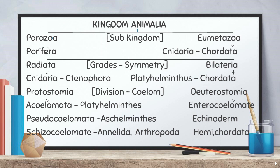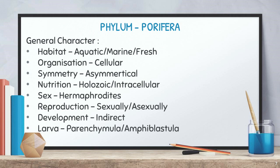Bilateria is further classified into two divisions: Protostomia and Deuterostomia. Protostomia includes acoelomates, pseudocoelomates, and schizocoelomates. Deuterostomia includes enterocoelomates. Acoelomate corresponds to phylum Platyhelminthes, pseudocoelomate to Aschelminthes, schizocoelomate includes Annelida and Arthropoda, and enterocoelomate includes Echinodermata, Hemichordata, and Chordata.